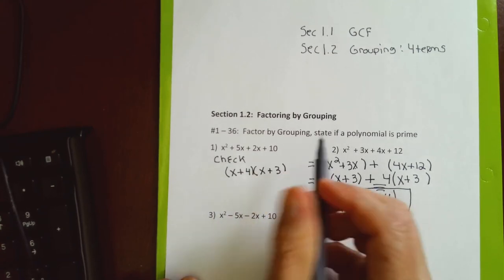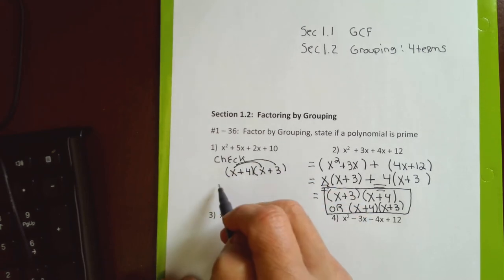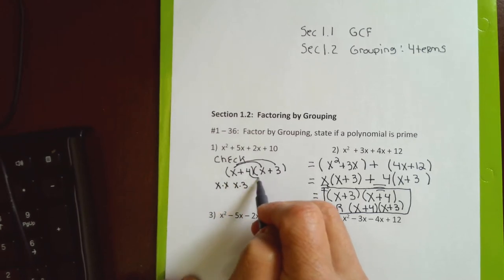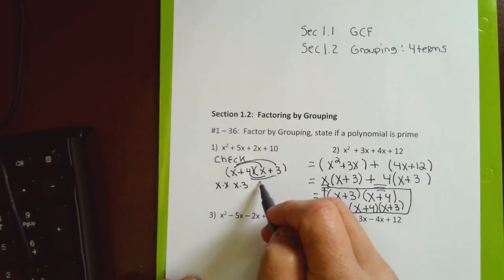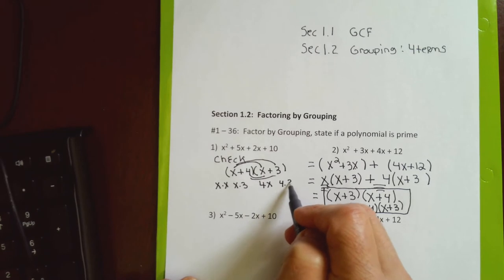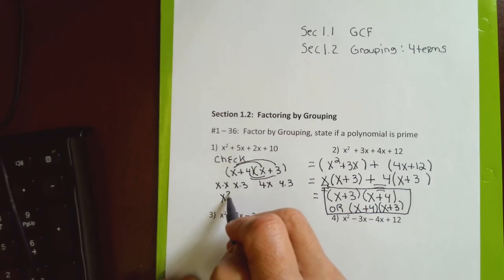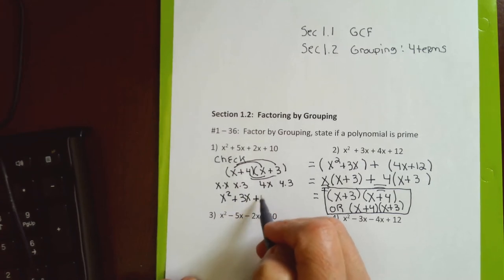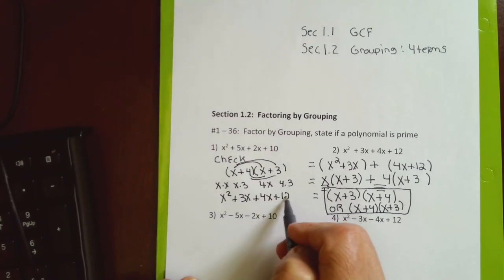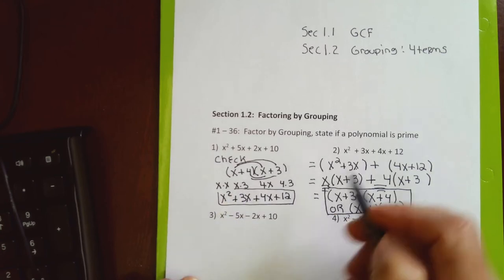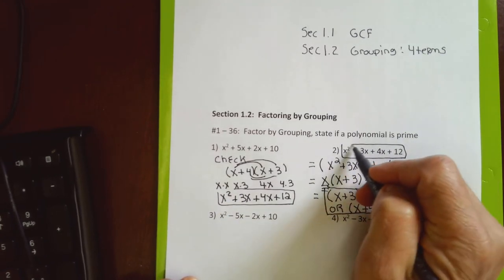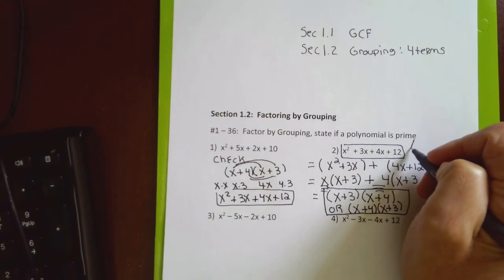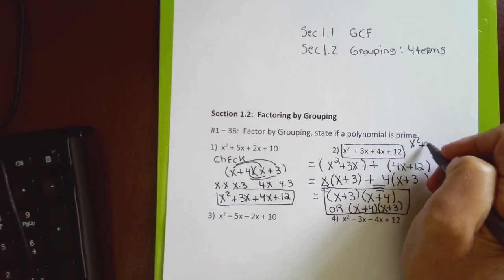To check, I clear the parentheses by multiplying: x times x, x times 3, 4 times x, and 4 times 3. That gives x², positive 3x, positive 4x, and 12. This is exactly the original problem, so I know I've done the work correctly. You could simplify to x² + 7x + 12 — there's nothing wrong with that if you know other factoring techniques.